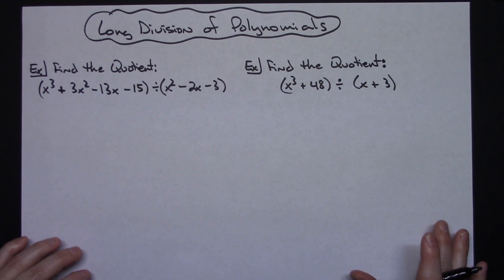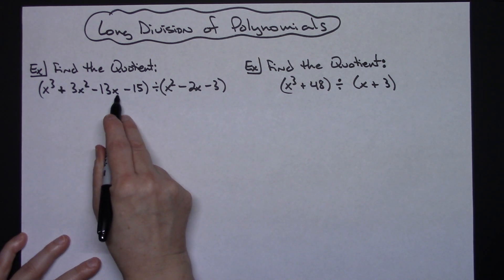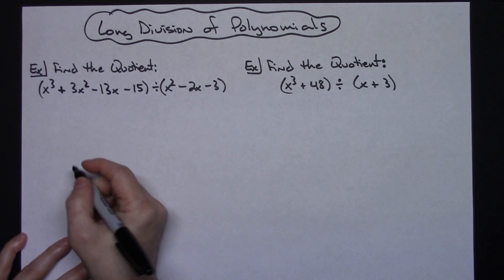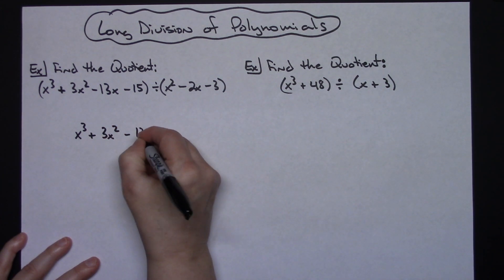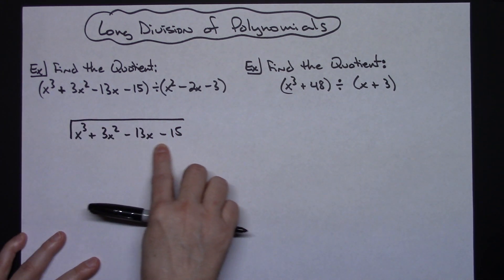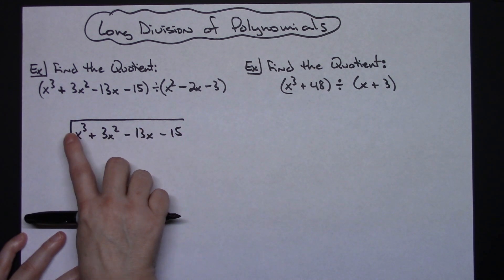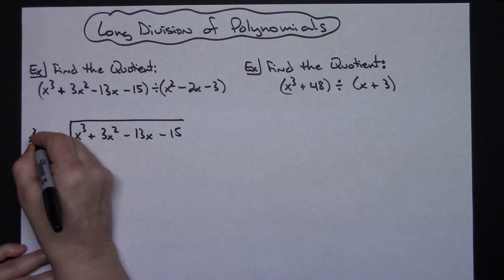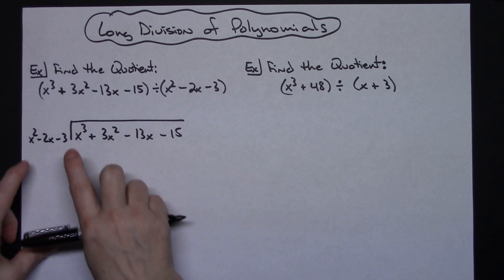We're going to start with this polynomial. We're going to look to see that the exponents are all in decreasing order and we are not missing any, and then that is what we are going to write on the inside of the long division bar: x³ + 3x² − 13x − 15. Because they are in decreasing order and we're not missing any terms, we can just write down exactly what we see. This trinomial we're going to put on the outside: x² − 2x − 3.